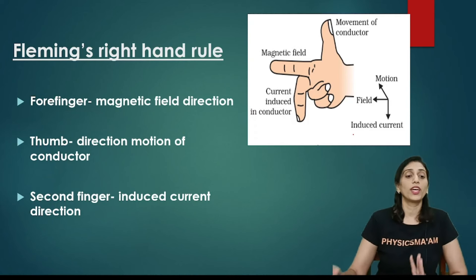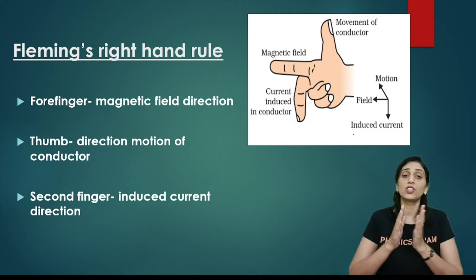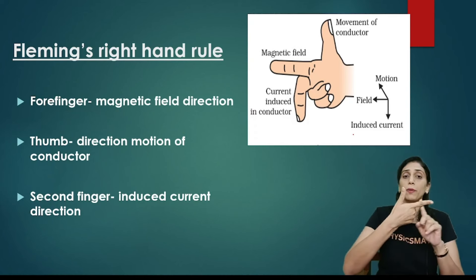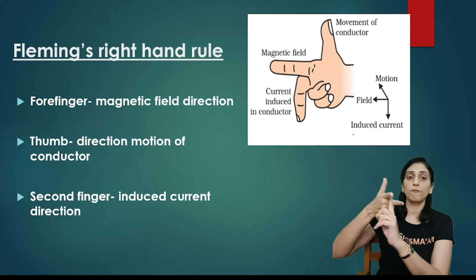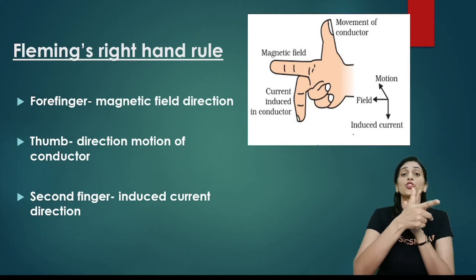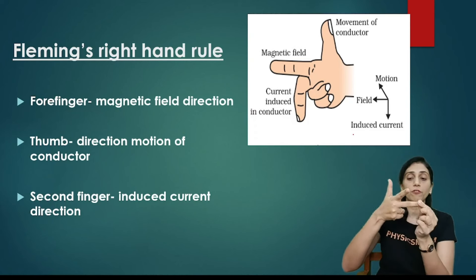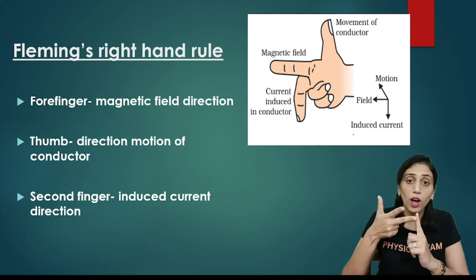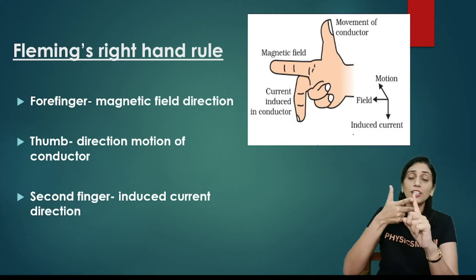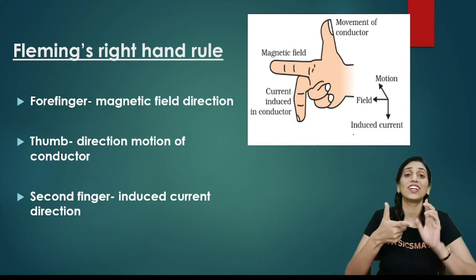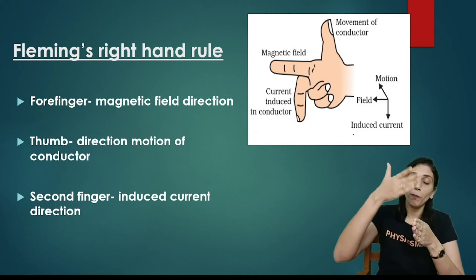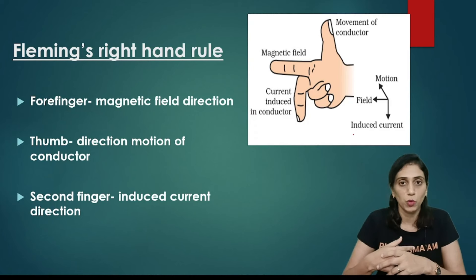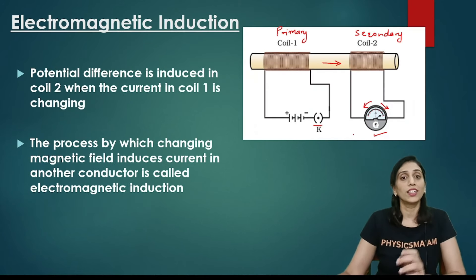We have to use Fleming's right-hand rule. This rule tells you the direction of the induced current. You take three fingers mutually perpendicular to each other — the four fingers show the magnetic field direction, your thumb shows the direction of motion of the conductor, and the middle finger shows the direction of the induced current. Induced current is maximum when the magnetic field direction and the direction of motion of the conductor are exactly at 90 degrees — then maximum flux cutting occurs, maximum EMF is induced, and your current is maximum. We use Fleming's right-hand rule to find the current direction in the coil.